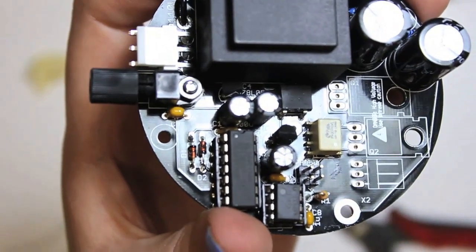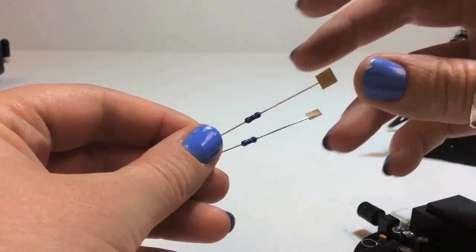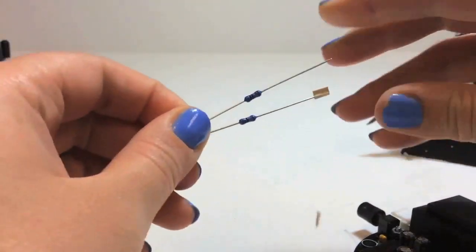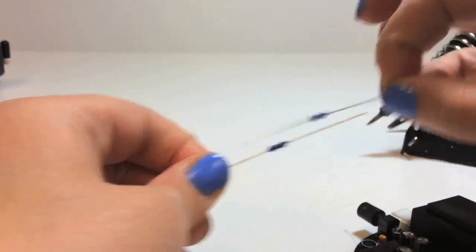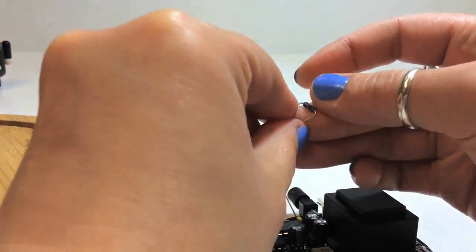In this video I will be showing you how to install the main board power components. First we install the R2 and R3 resistors. These are very important because without them the capacitors cannot drain their energy and the board will be unsafe to service.